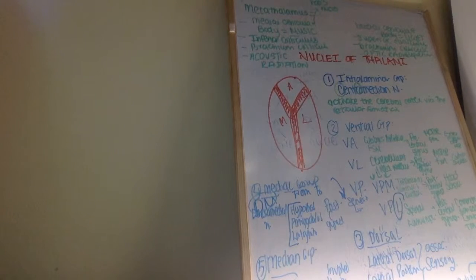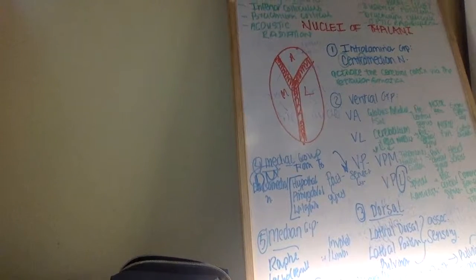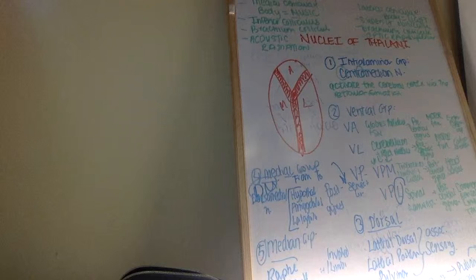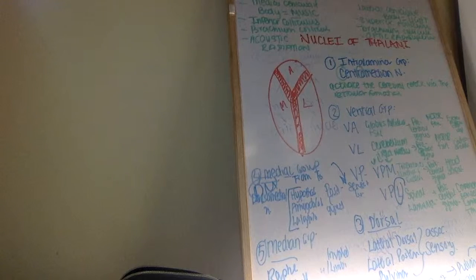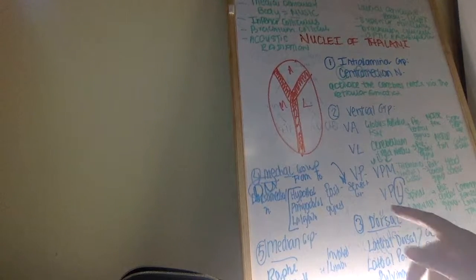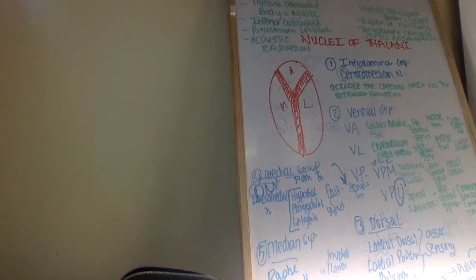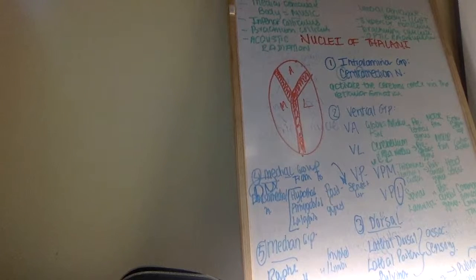The sixth group is the anterior group of nuclei, which is literally a component of the limbic system — it's part of the Papez circuit. The mammillary bodies project to the anterior nucleus of the thalamus via the mammillothalamic tract, and from the thalamus they project back to the cingulate gyrus via the internal capsule.